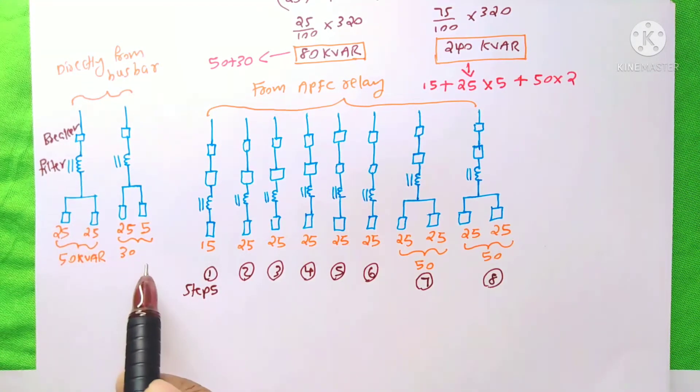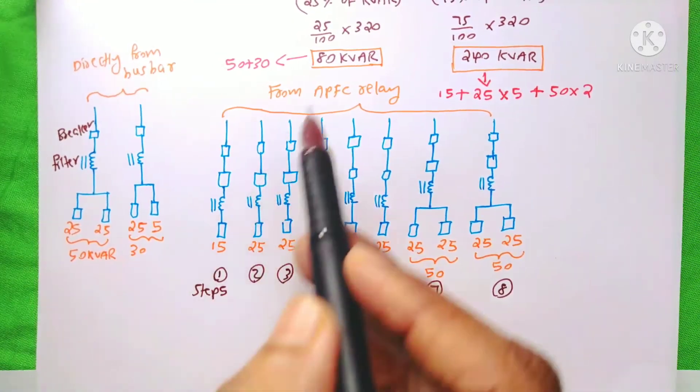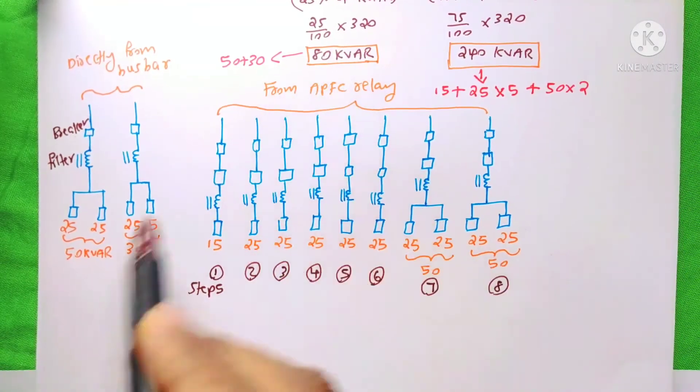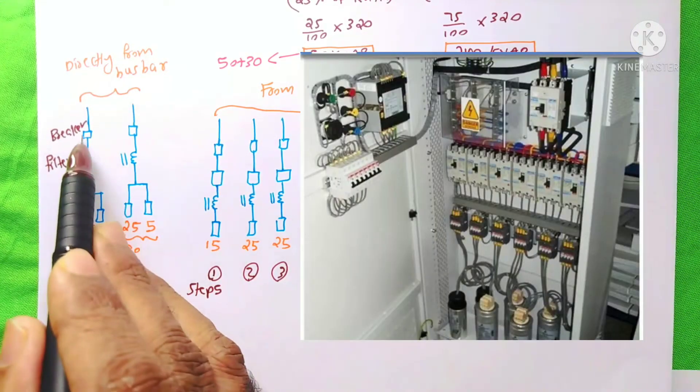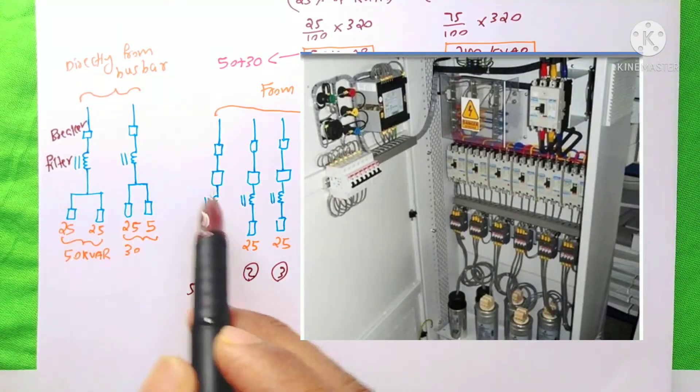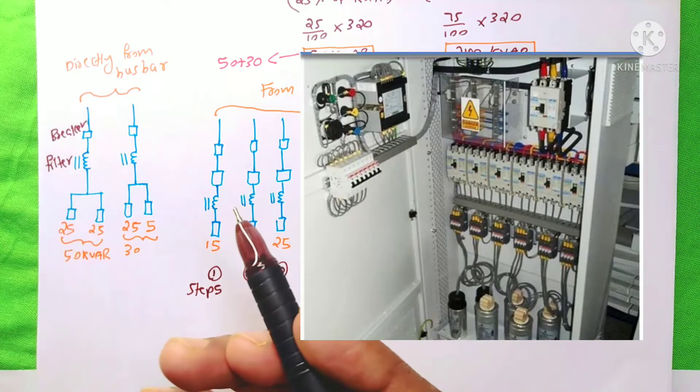And here, you might be thinking that, why I have divided this 80 kVAR like this and connected it into 2 different breakers. The reason is, if during the operation, if any breaker is damaged,